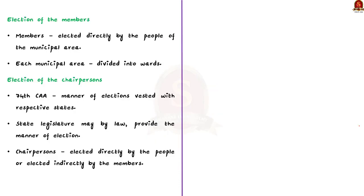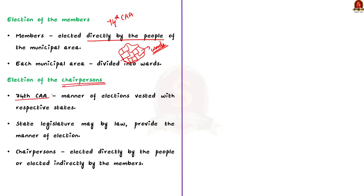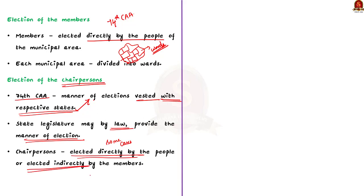The 74th Amendment says that all members of a municipality shall be elected directly by the people of the municipal area. For the purpose of elections, each municipal area is divided into territorial constituencies called wards. Regarding chairpersons, the manner of election is vested with the respective states — in some states chairpersons are elected directly by the people, but in some states they are elected indirectly by the members of the municipalities.